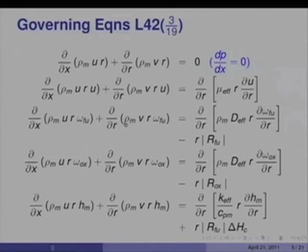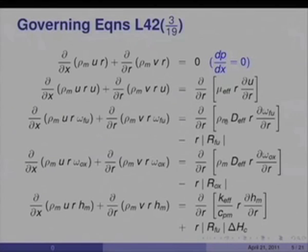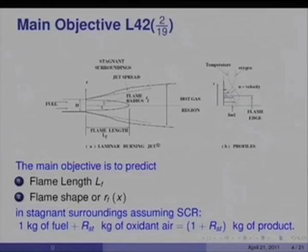Because this is an axisymmetric round jet, the continuity equation without constant properties is: d/dx(ρm·u·r) + d/dr(ρm·v·r) = 0. In a free jet the pressure gradient term is zero, so the momentum equation has only convection and diffusion terms per the boundary layer approximation. There are equations for the fuel, the oxidant, and the energy (enthalpy Hm), with source term R×Rfu×ΔHc. Here Hm = Cpm(T − Tref) represents the sensible enthalpy.